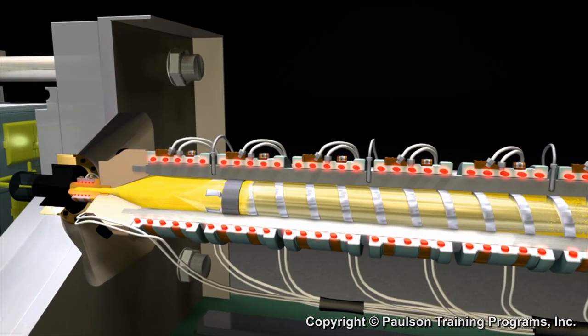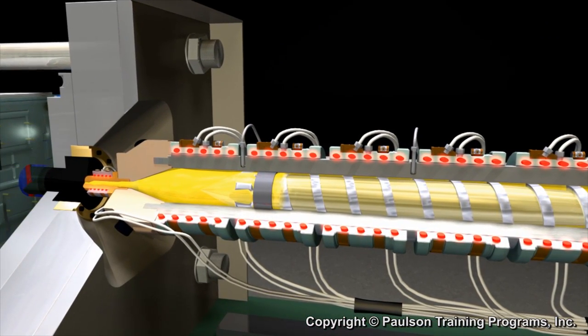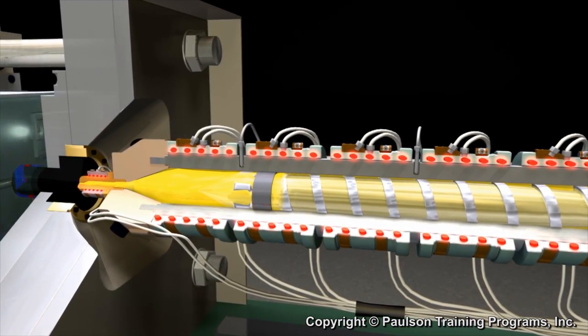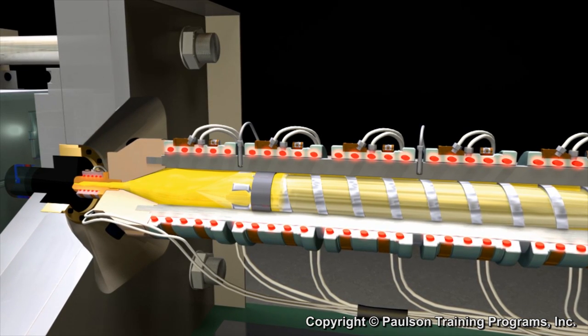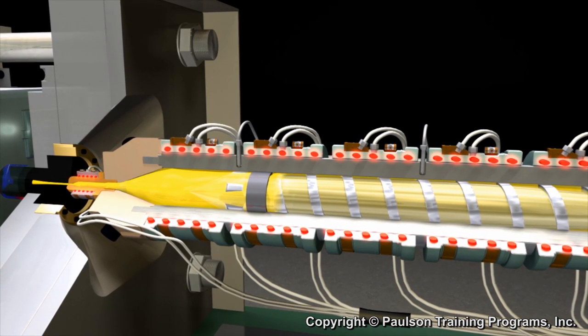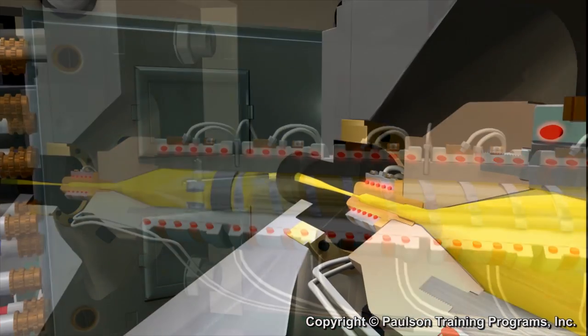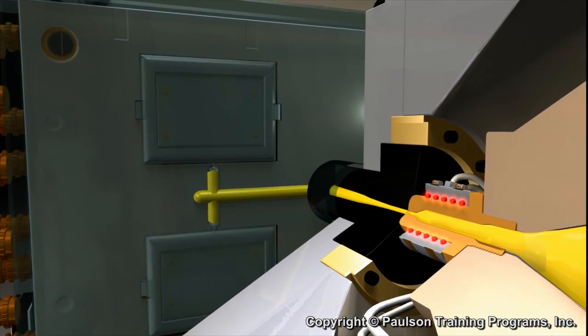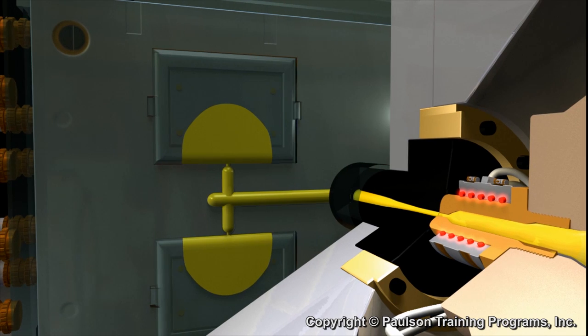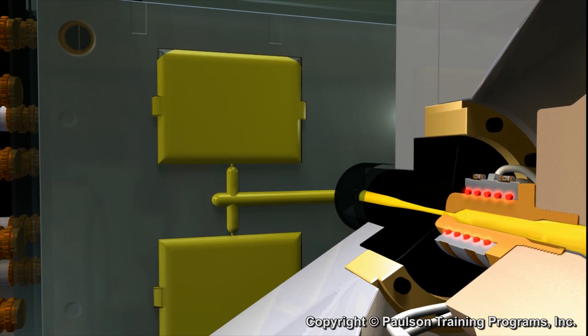When the set volume of plastic ahead of the screw accumulates, the screw stops rotating. Then the screw, acting as a plunger, pushes the melted plastic out of the injection barrel through the nozzle and into the mold. This is the fill phase of the process.